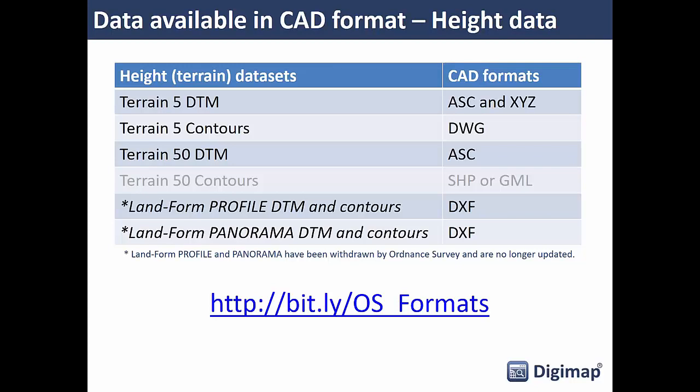Also included are Landform Profile and Landform Panorama, which are the precursors to Terrain 5 and Terrain 50. Ordnance Survey will no longer update Profile and Panorama, but they're still available through the interface if you want to look at features as they were in previous versions — they were available in DXF format.